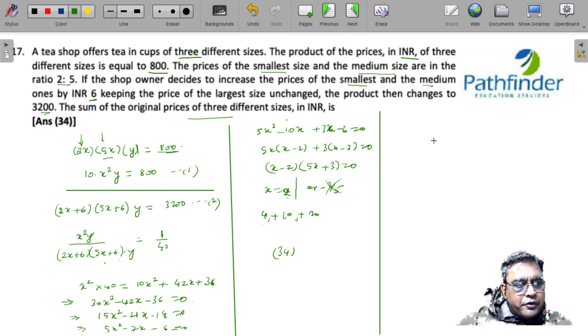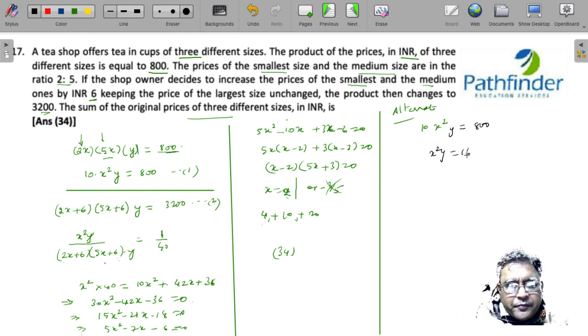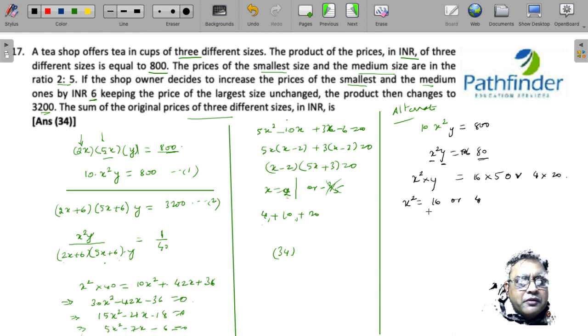Another way I would have viewed this is by trial and error. The moment I got the first equation, this is just an alternate method: 10x²y = 800, so I get x²y = 80. Now I try to break 80 as a sum of one perfect square and one other number. So I can express x² into y as 16 into 5 or 4 into 20. So you get two possible values of x². x² can be 16 or x² can be 4. Now you just plug in the value of x as either 4 or 2.